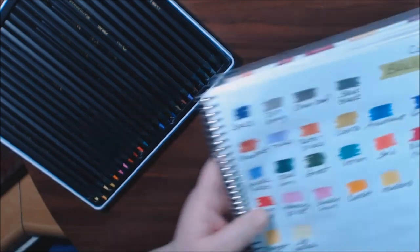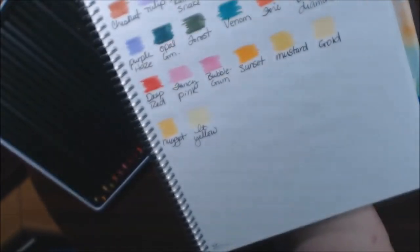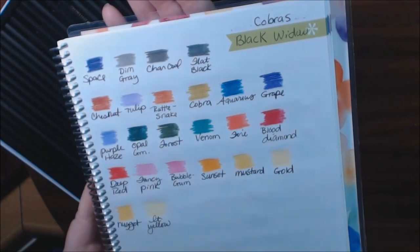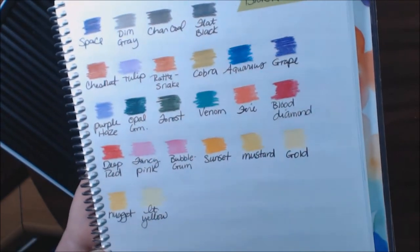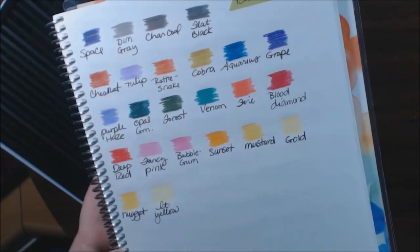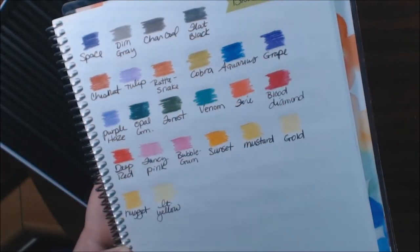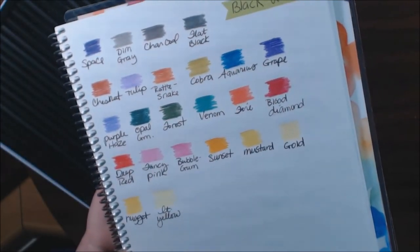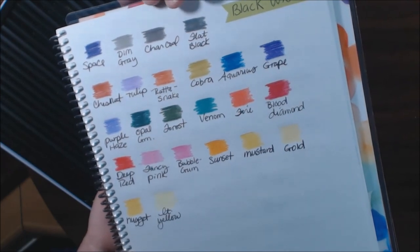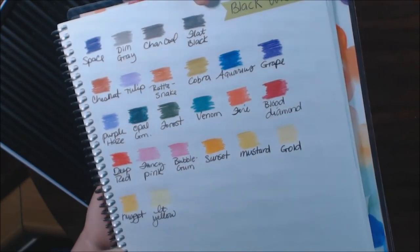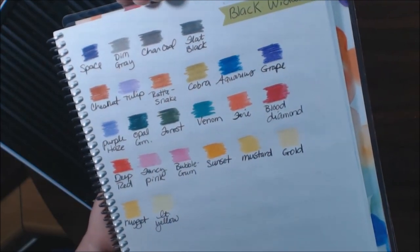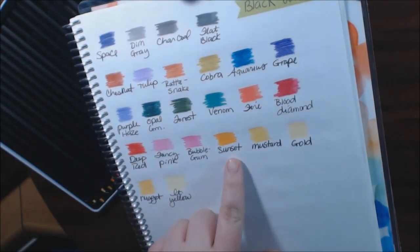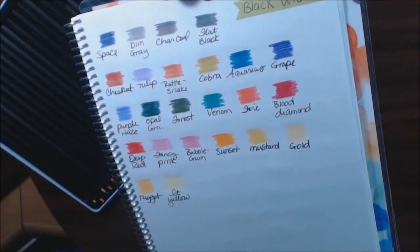Alright. There you go, guys. The Black Widow Cobras. Brand new. Just got them. Beautiful. Lots of yellows and greens in this one. Like three different shades of grey. It says flat black, but it looks more like a dark grey to me. And I'm really loving this sunset color here.